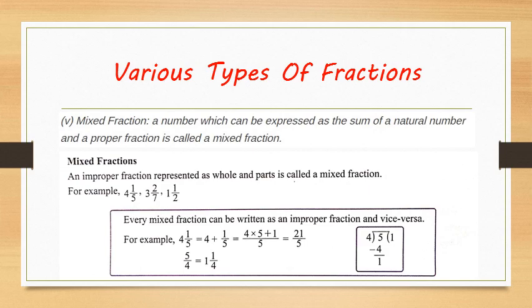When we have 5 by 4, which is an improper fraction, and we want to convert it into a mixed fraction, we divide the numerator by the denominator. When you divide 5 by 4, the remainder is 1 and the quotient is also 1. The quotient is written as the whole number, the remainder becomes the new numerator, and the denominator remains the same. This is how we convert an improper fraction into a mixed fraction.